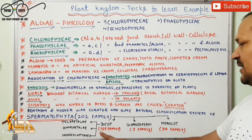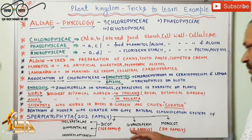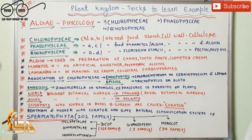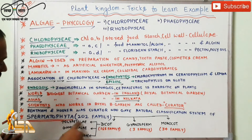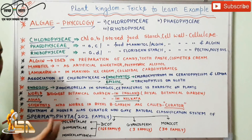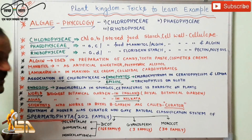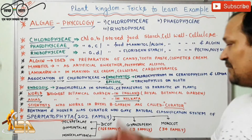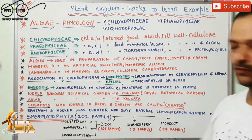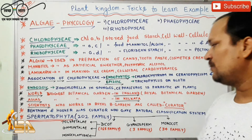In dicot plants, Bentham and Hooker explained 165 families of the plant kingdom. In gymnosperm, there are 3 families explained. Monocot has 34 families under Spermatophyta. In dicot, there are three different subdivisions: polypetalae, which are plants with many free petals; gamopetalae, which have fused petals; and monochlamydeae. Dicot plants may have free petals, fused petals, or a single perianth called monochlamydeae.